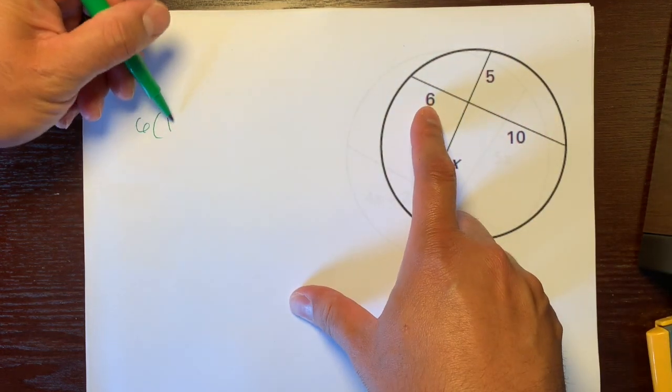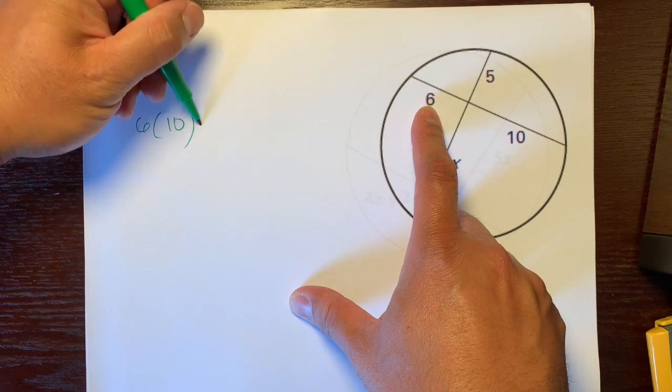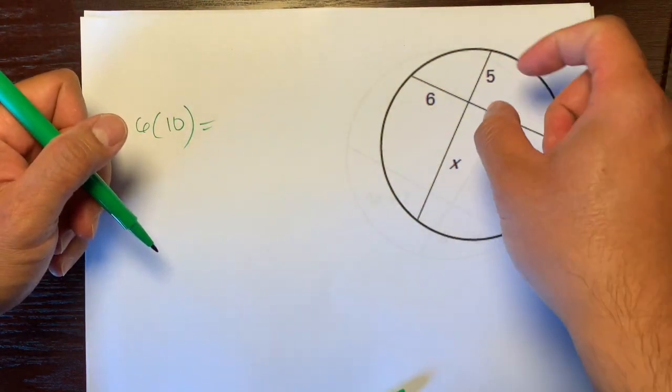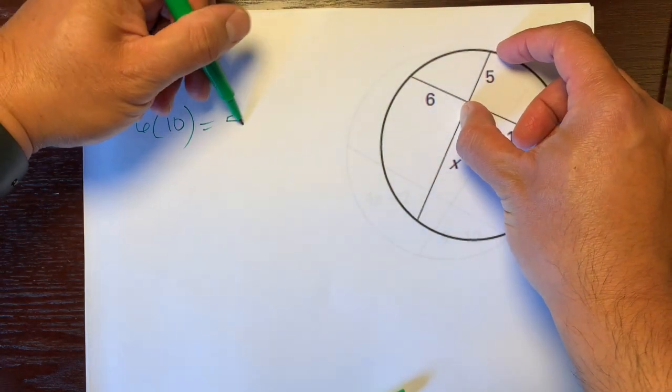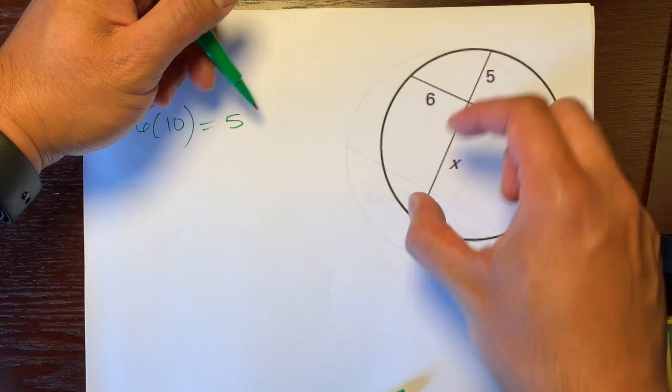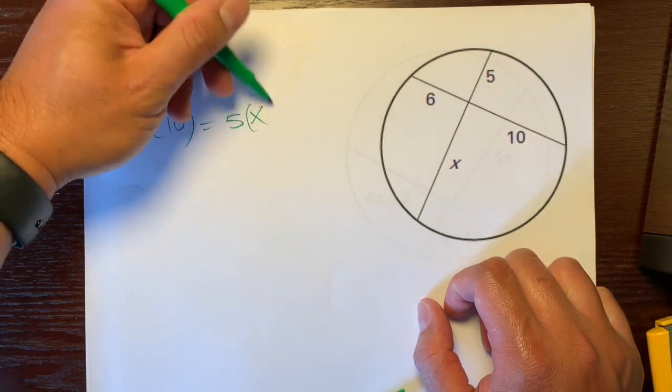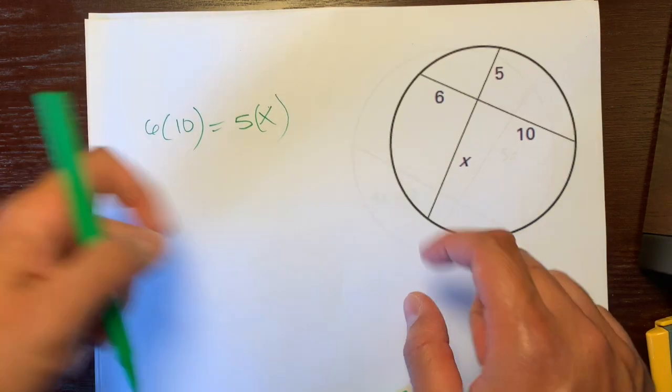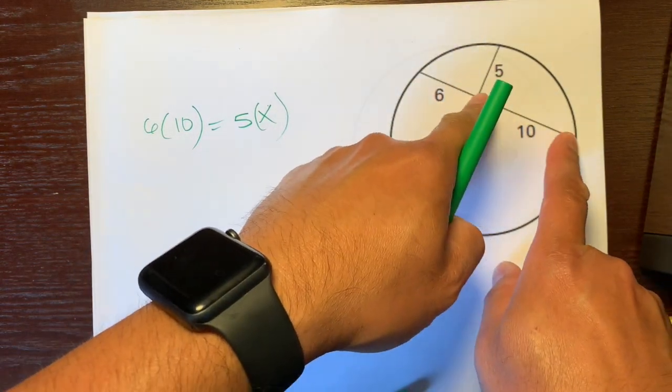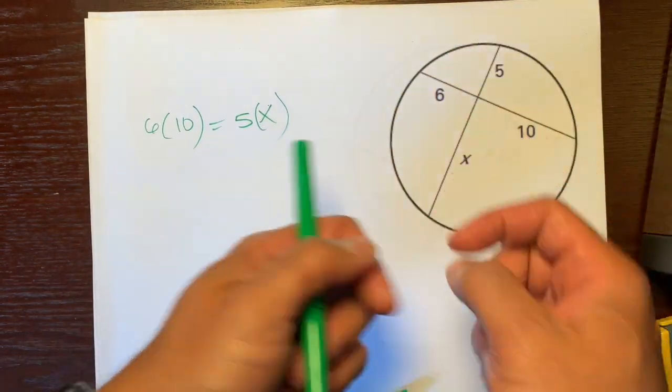Six times ten is equal to five times its other piece, which is x. You can put parentheses around it if you want to be consistent. So this piece times this piece is equal to this piece times this piece.